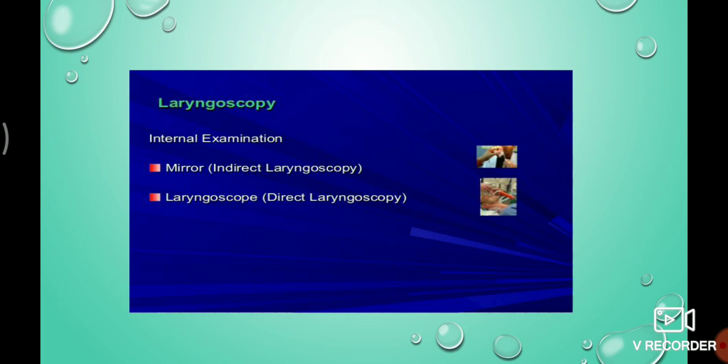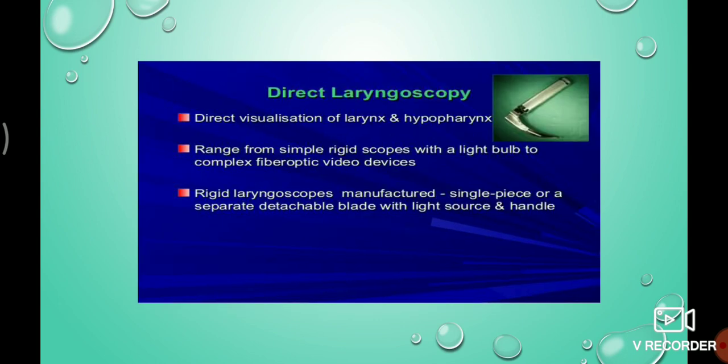Direct laryngoscopy is the direct visualization of the larynx and hypopharynx. It ranges from a simple rigid scope with a light bulb to complex fiber-optic video devices. These are the different instruments available for direct laryngoscopy.